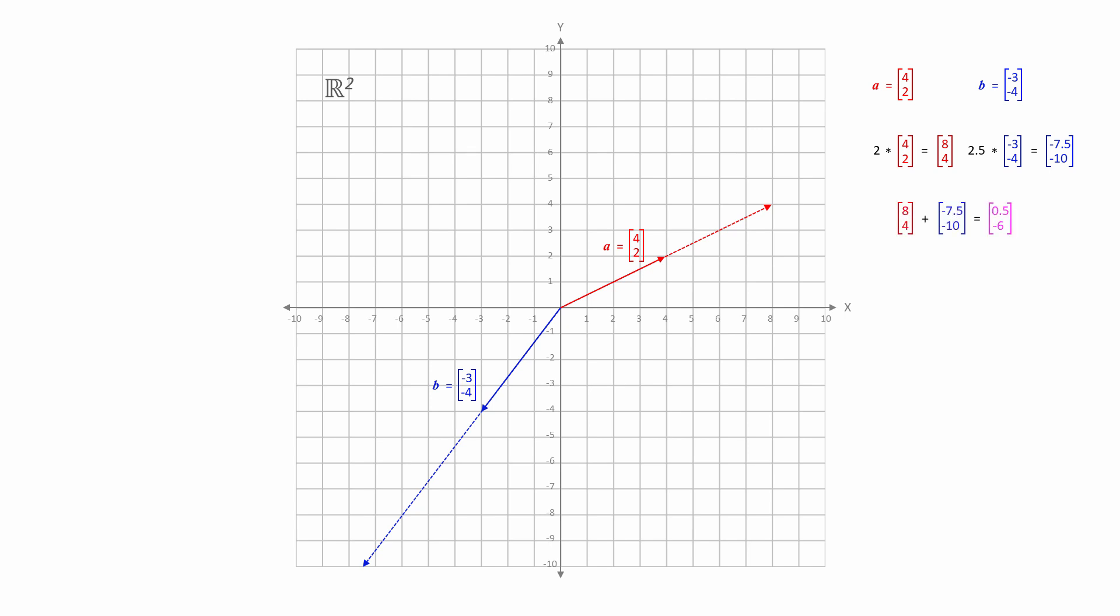The new vector, which we'll call w again, can be described by the equation w equals 2a plus 2.5b.